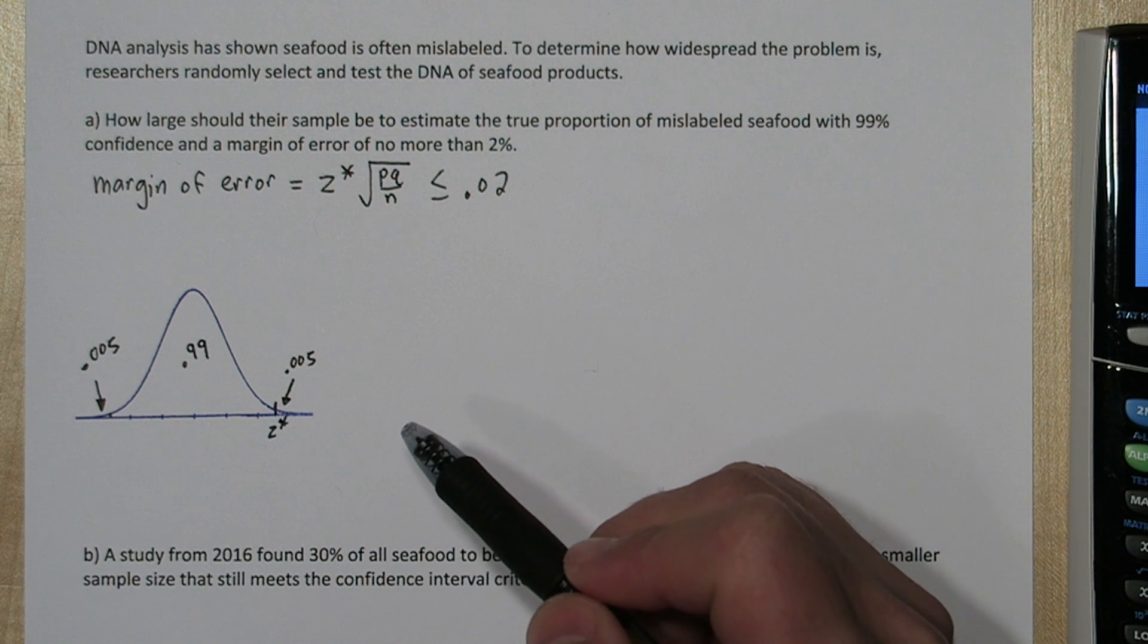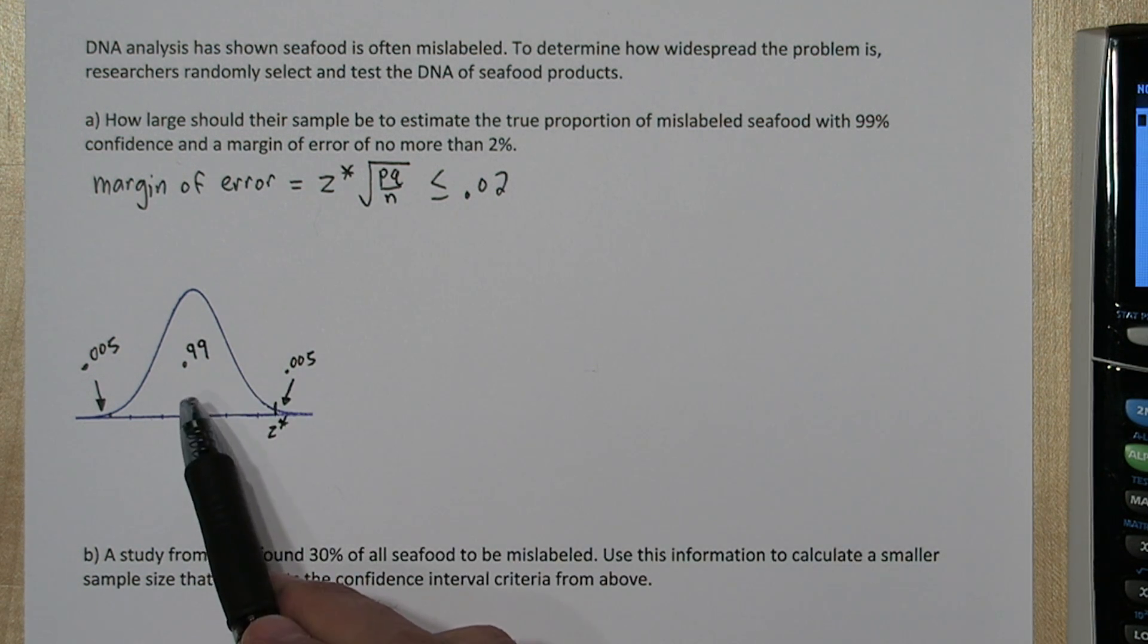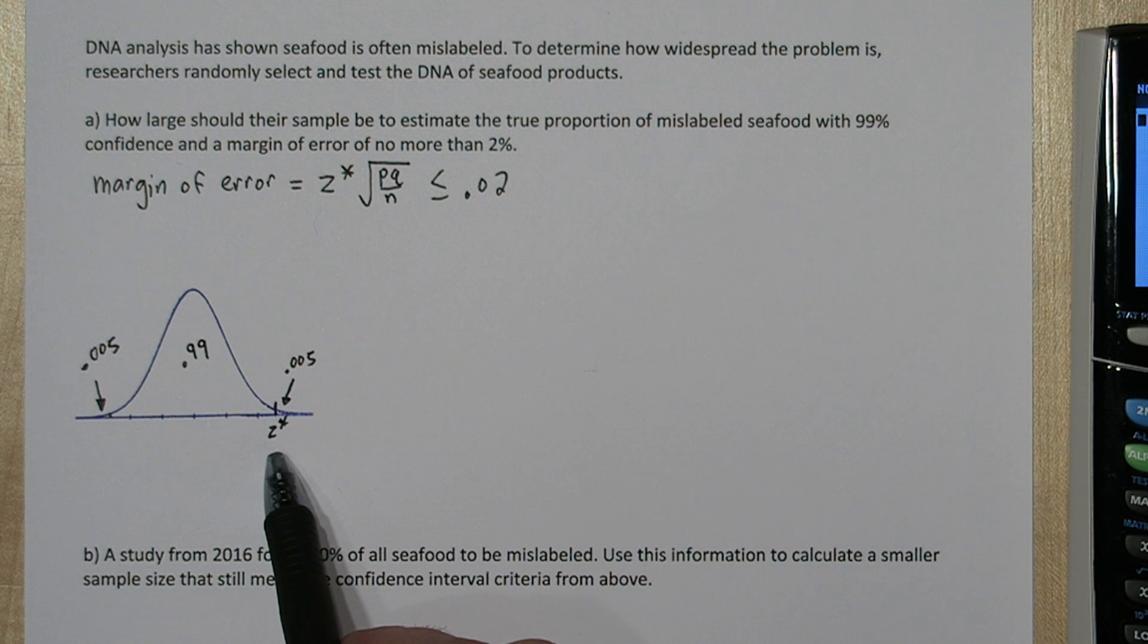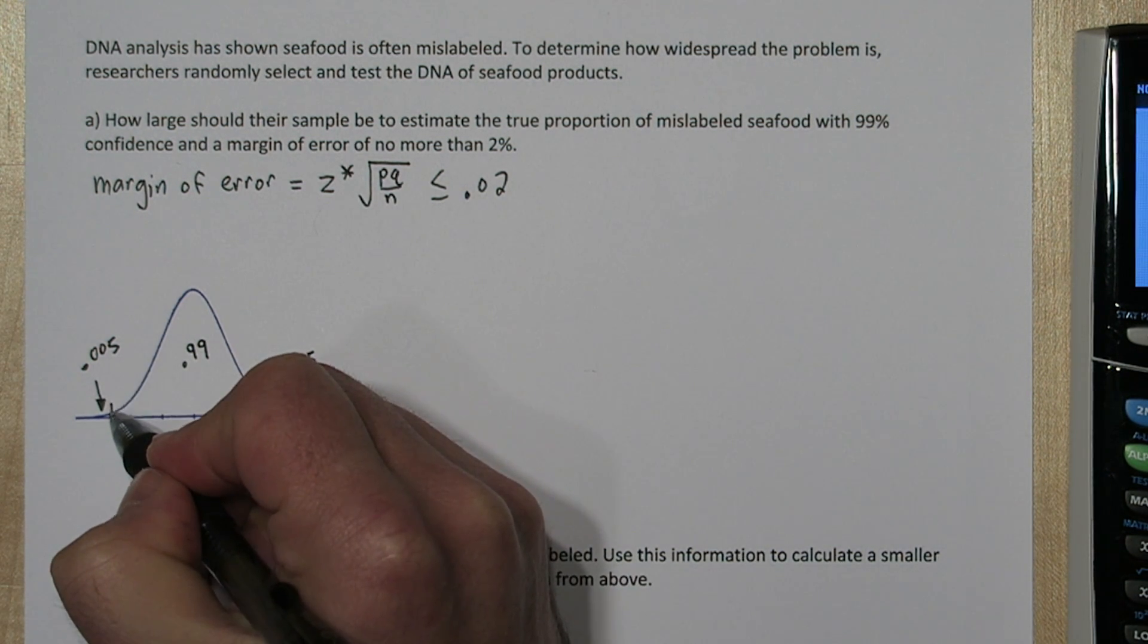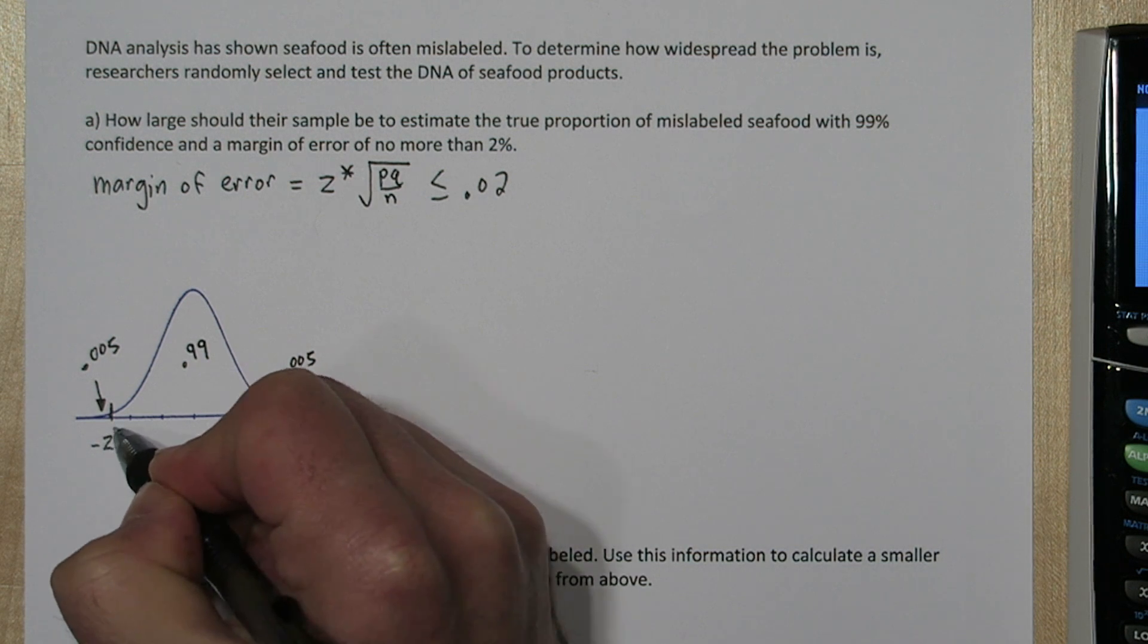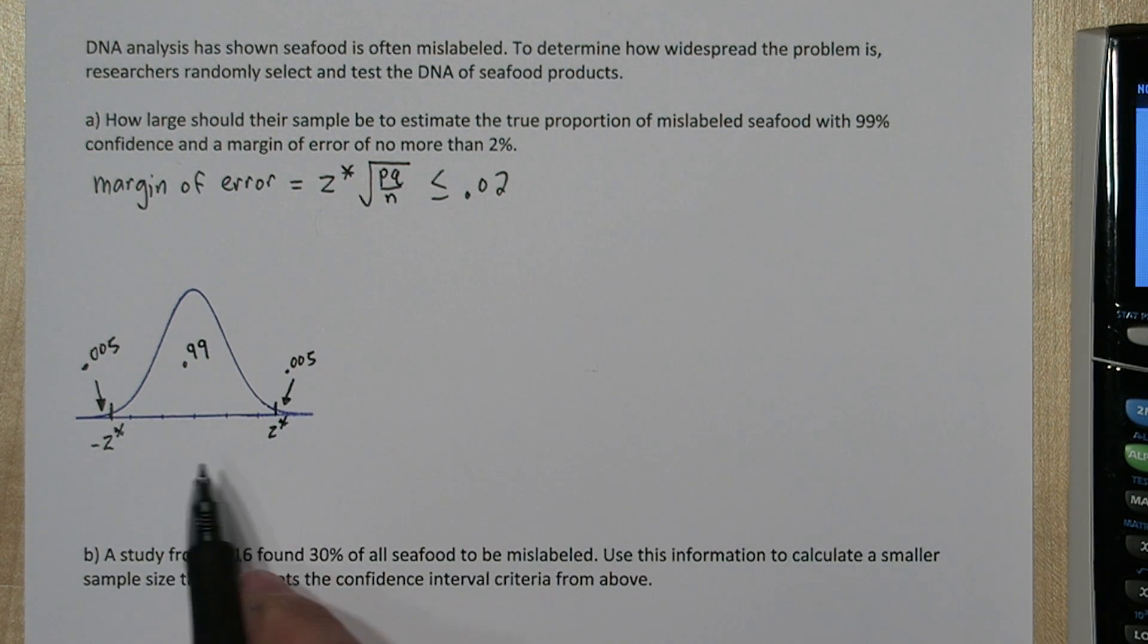I stamped a normal distribution here, and we want the middle 99% to be restricted. So we need to figure out what z star, what critical value, cuts off the middle 99%. So down here is actually the negative critical value. So how many standard deviations from the center do we have to go to cut off 99%?